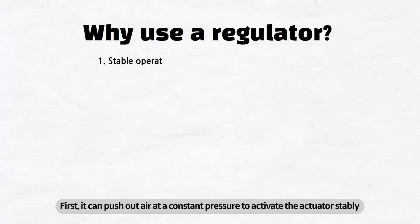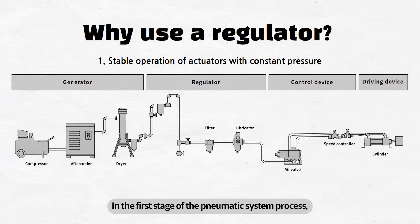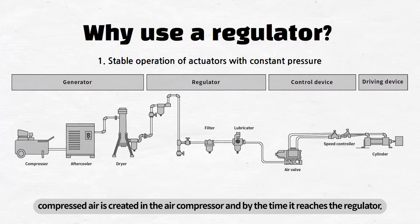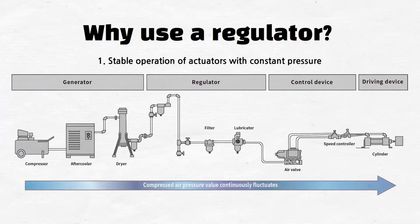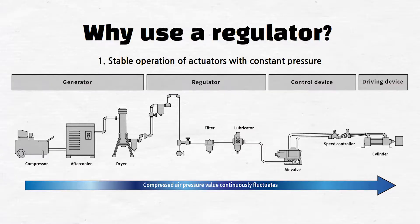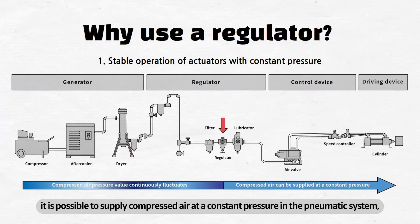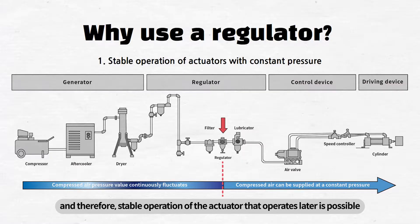First, it can push out air at a constant pressure to activate the actuator stably. In the first stage of the pneumatic system process, compressed air is created in the air compressor, and by the time it reaches the regulator, the compressed air pressure is not constant but constantly changes while passing through various processes. By installing a regulator, it is possible to supply compressed air at a constant pressure in the pneumatic system, and therefore, stable operation of the actuator that operates later is possible.